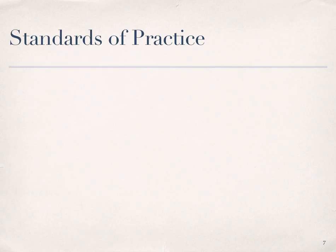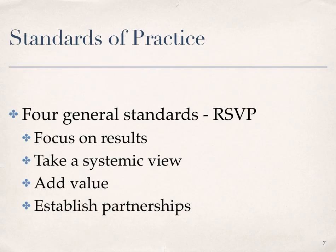Next, I want to spend a few minutes talking about standards of practice. These are published by the International Society for Performance Improvement, or ISPI, and are also provided in the text. There are a total of ten standards considered critical for guiding practice in the field of human performance technology. The first four are general standards, remembered with the acronym RSVP for Results, Systematic, Value, and Partnerships. We always want to focus on results in terms of performance outcomes, and taking a systemic view is a very important general standard of practice.